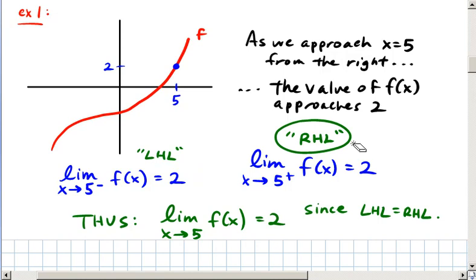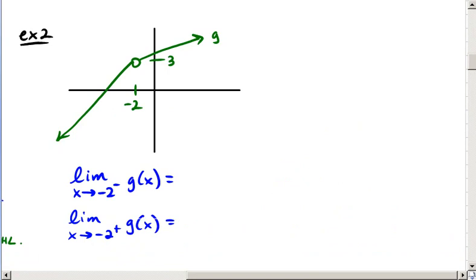So here's another example. In this situation, there's a hole in the graph at the point (-2, 3). And so we want to know what the limit is as x approaches -2 from the left and from the right.